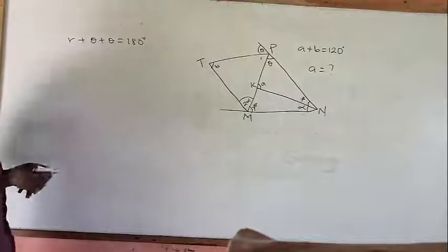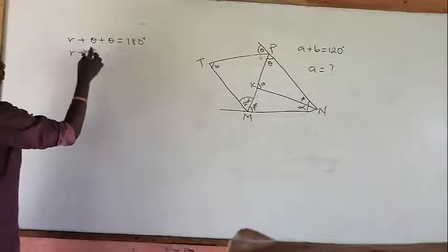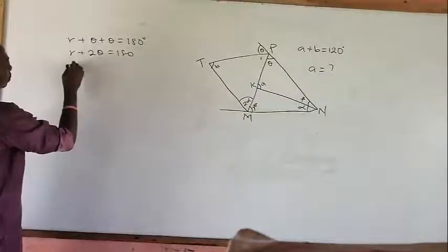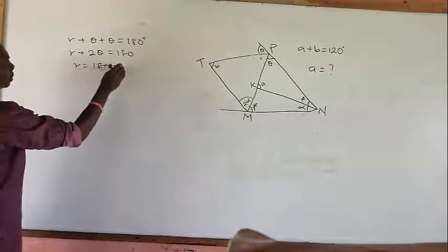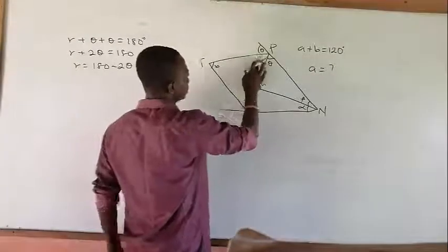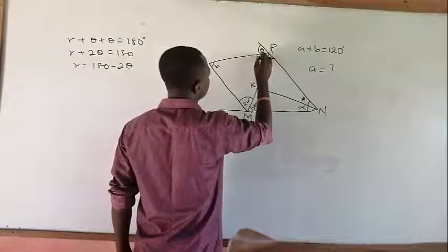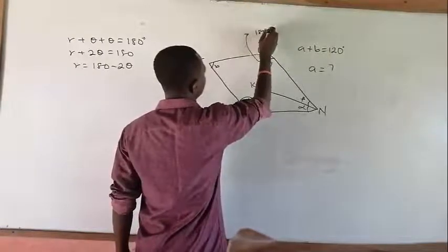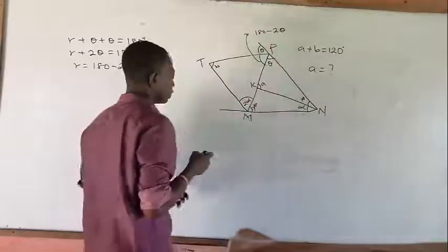So I can say R plus theta plus theta, and we add 2 theta to give 180. So R equals 180 minus 2 theta. So this side is 180 minus 2 theta.